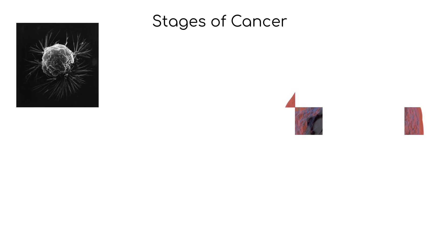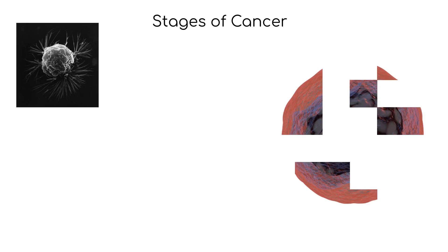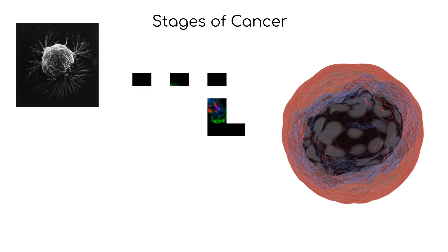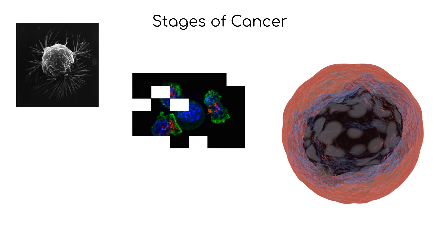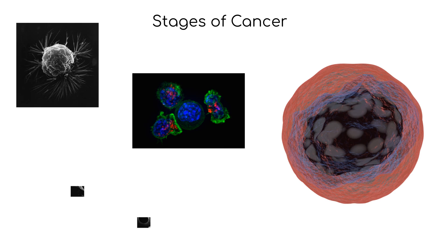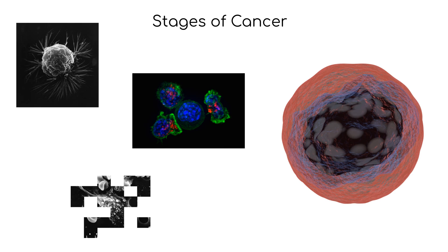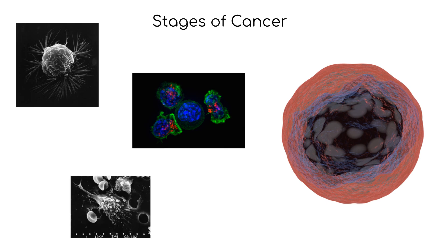So what is cancer? Cancer is a group of diseases characterized by the uncontrolled growth and spread of abnormal cells in the body. These cells can form tumors, invade nearby tissues, and even spread to other parts of the body through the bloodstream or lymphatic system.